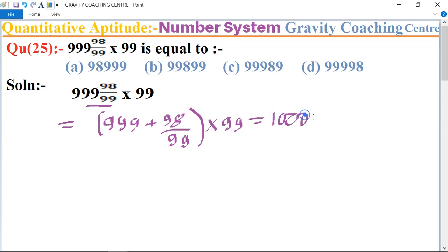And this equals 1000 minus 1 plus 98 upon 99, and bracket of 99.